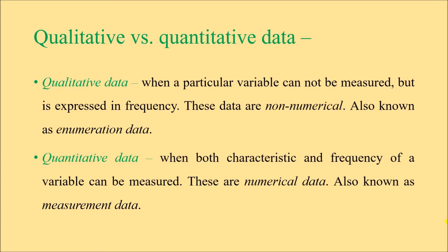The next classification is qualitative versus quantitative data. When a particular variable cannot be measured but is expressed in frequency, that is qualitative data. In quantitative data, both the characteristic and the frequency of the variable can be measured. Qualitative data are non-numerical, also known as enumeration data, whereas quantitative data are numerical, also known as measurement data. The key difference is that in quantitative data the variable's characteristic can be measured, while in qualitative data it cannot. In both types, however, the frequency can be measured.